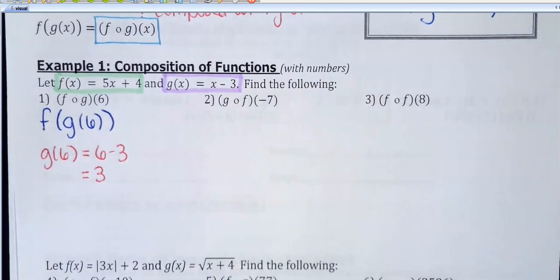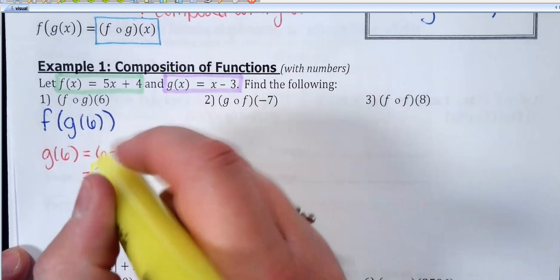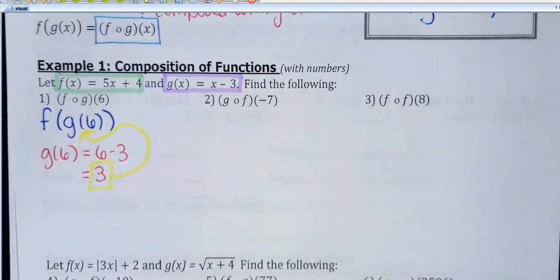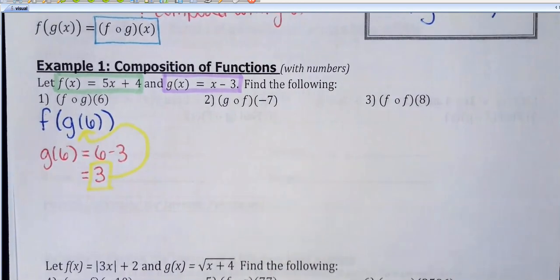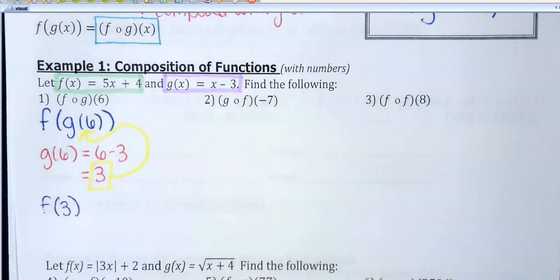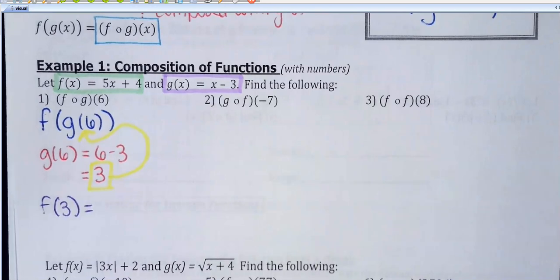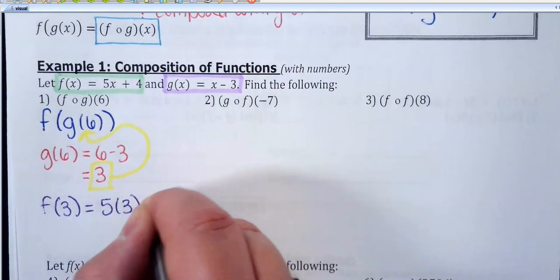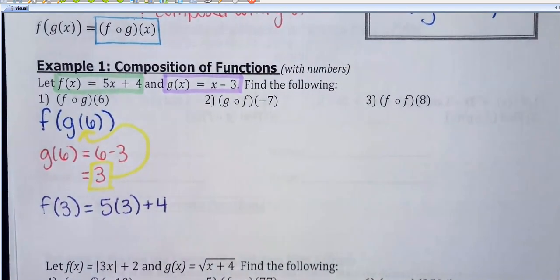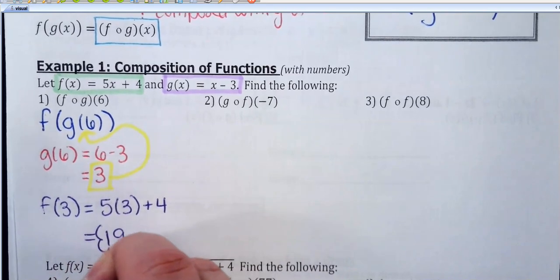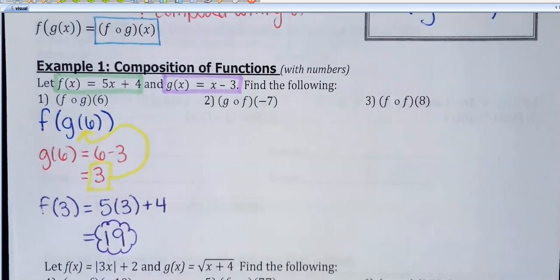That's not the answer to the question — that's just the first problem. To get the actual answer, you substitute what g of 6 equals in place of that g of 6. So I'm going to do f of 3. The f function rule is 5x plus 4, so everywhere I see an x I replace it with 3: 5 times 3 plus 4 gives me 15 plus 4, which is 19. That's the actual answer. Start with g of 6, find that number, plug it into the other function, and simplify.